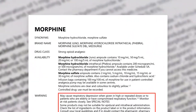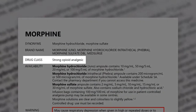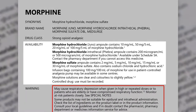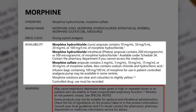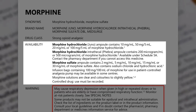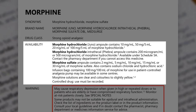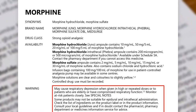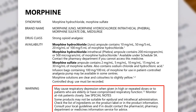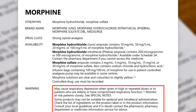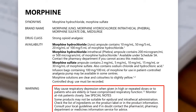The drug class section tells you that morphine is a strong opioid analgesic. The availability section lists all the products that are available. Always check the product that you have against this information to make sure that the information in the rest of the monograph can be applied to the medicine that you are giving to your patient. If the brand you have is not listed, check with a pharmacist to make sure that the information in the monograph can be used.